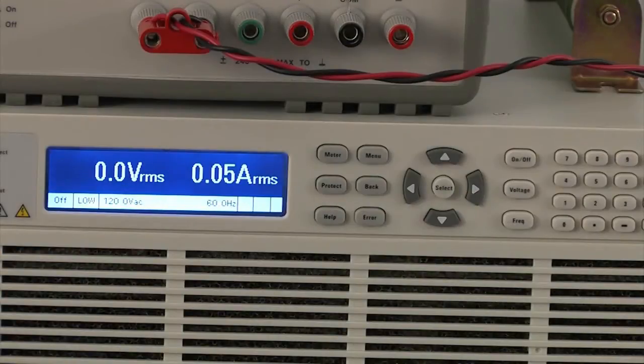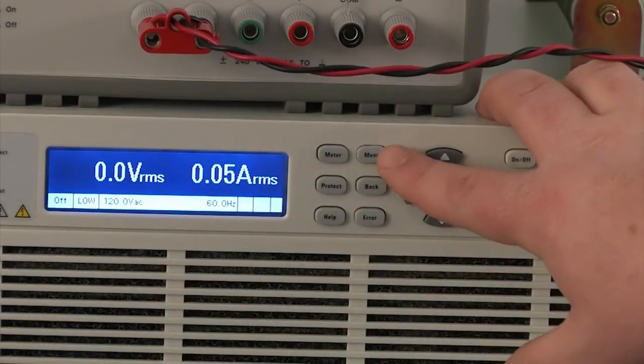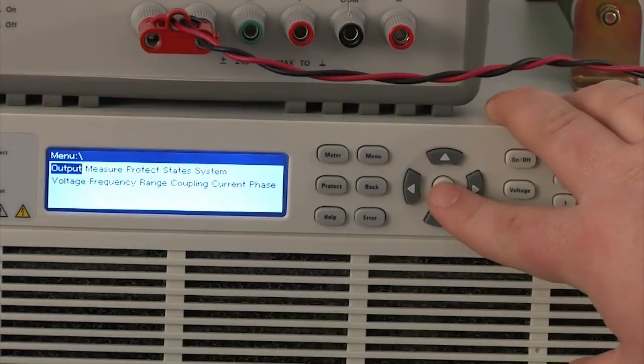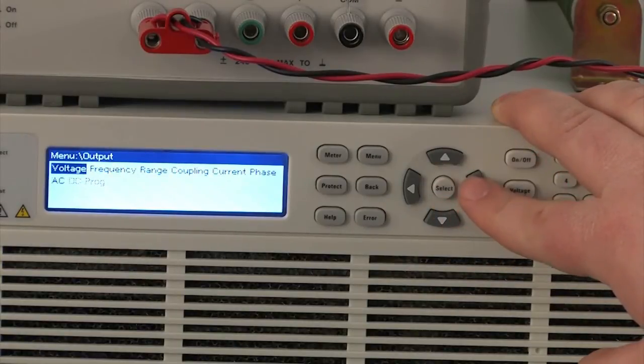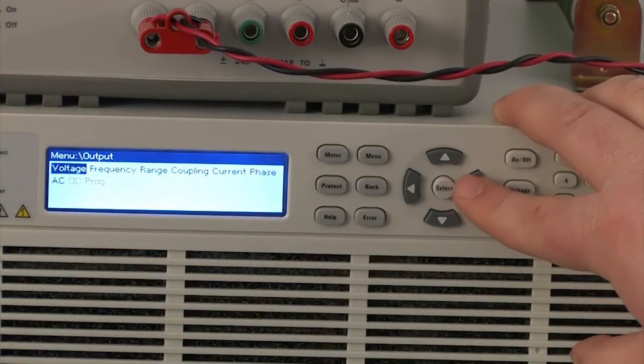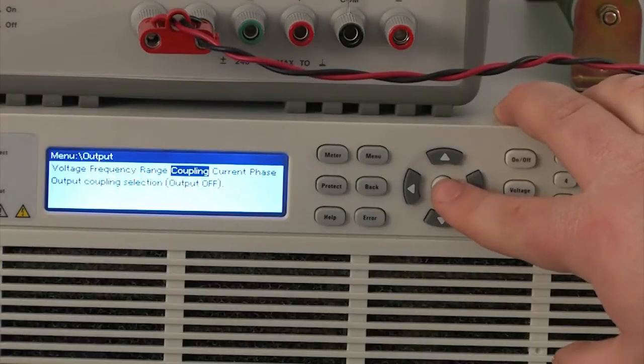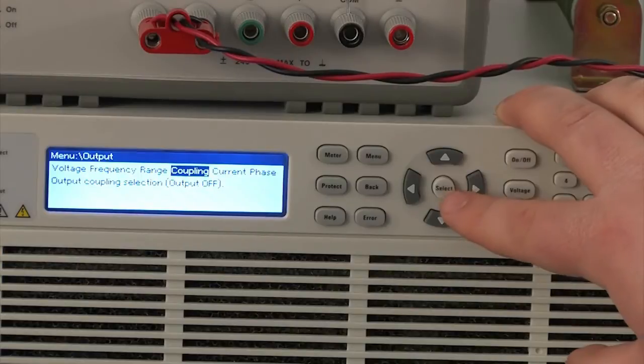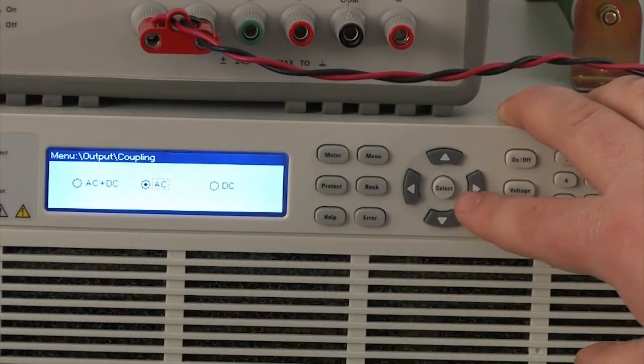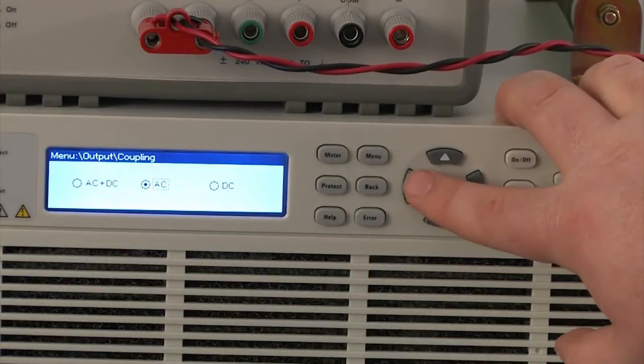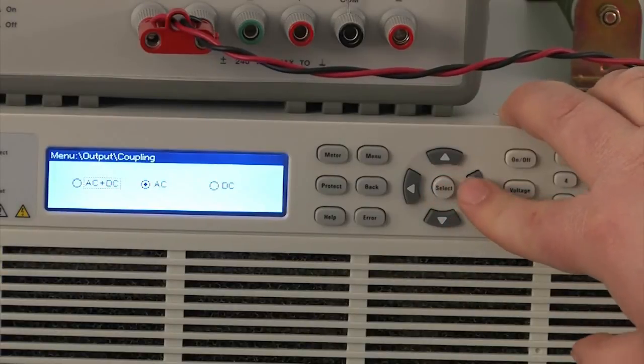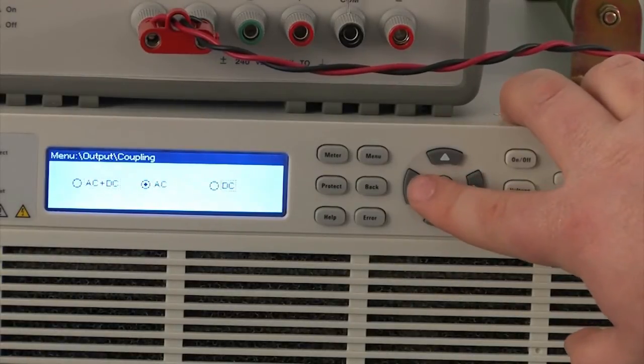So now we're going to do a short tour of the menu system, more particularly the output menu. One of the cool features of this product is that it has both AC and DC output so you can add DC offsets to your AC signals. You would enable that by going to this coupling menu and choosing AC plus DC or if you just want DC, you can choose just DC.